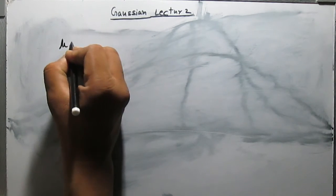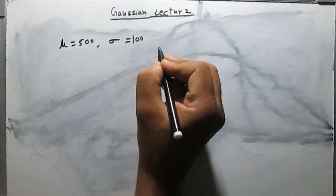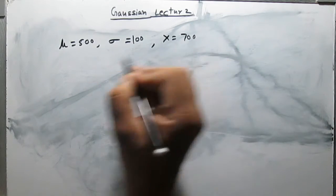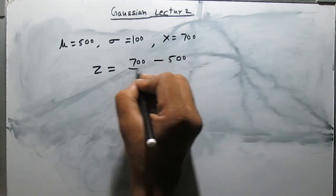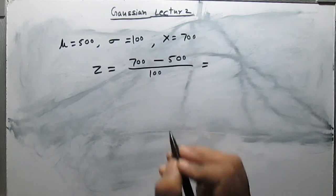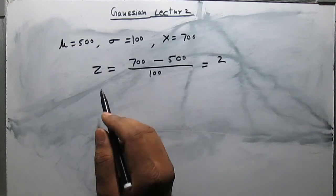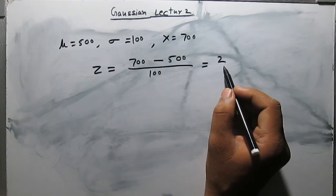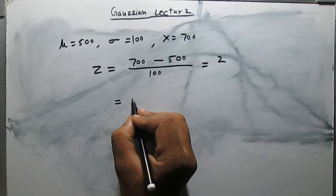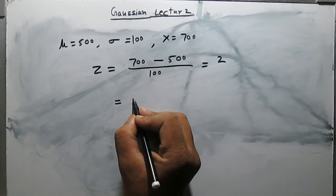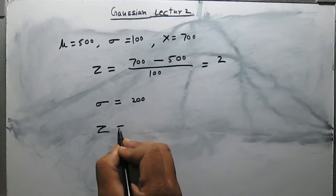Now suppose in the same data the mu is 500 and standard deviation is 100. The travel distance of the passenger is 700, then the z-score will be 700 minus 500 divided by 100, which equals 2. It means in the previous case, in the data, 700 is two standard deviations away from the mean. But if we take the second example where the standard deviation has increased and sigma is 200, then the z-score will be equal to 1.